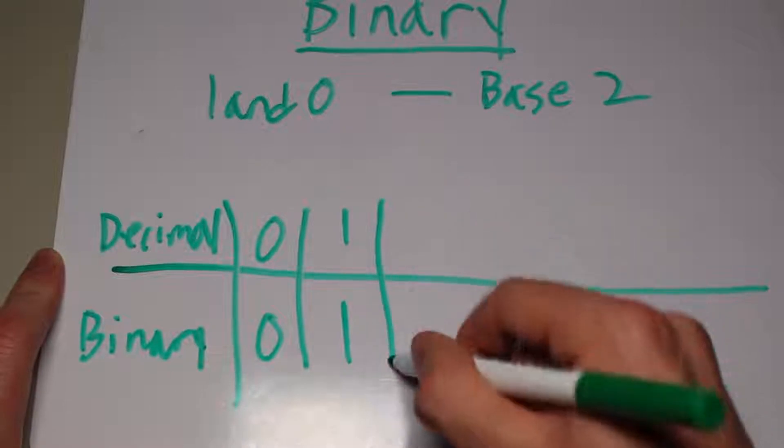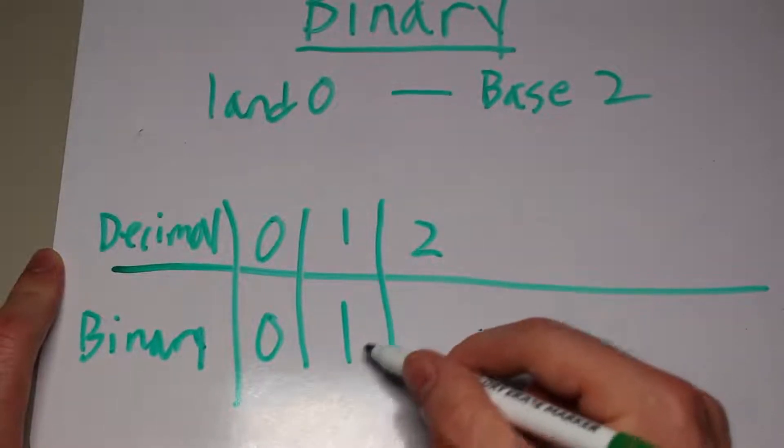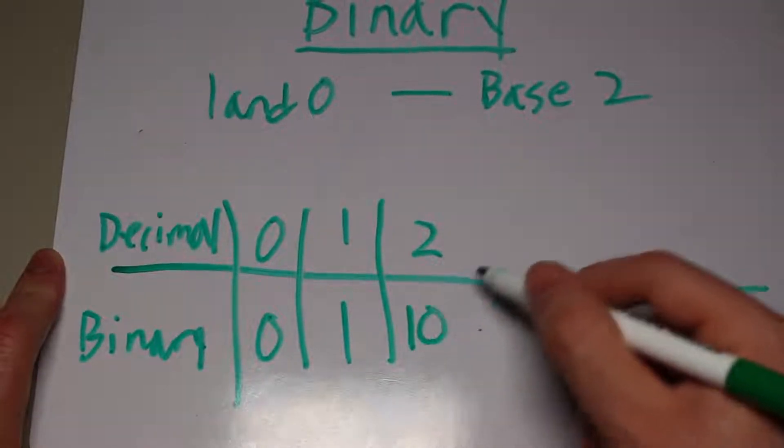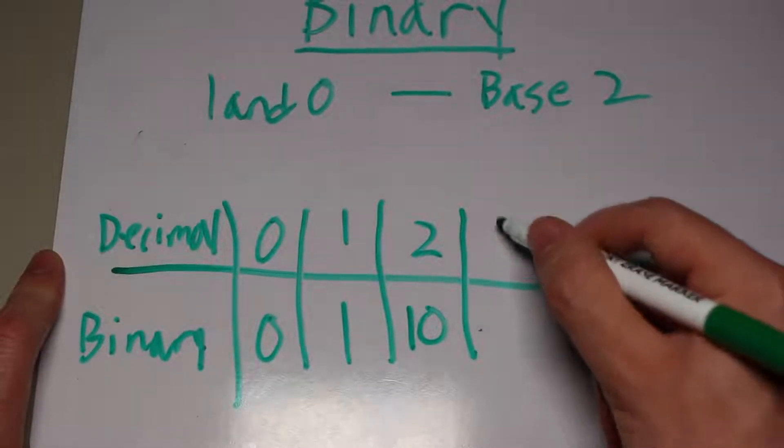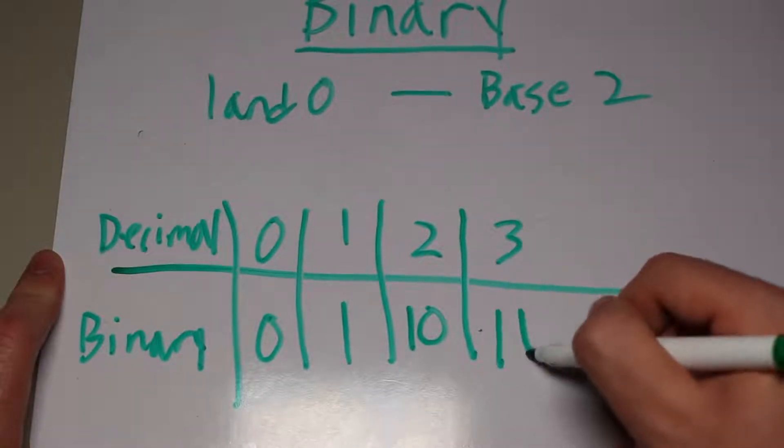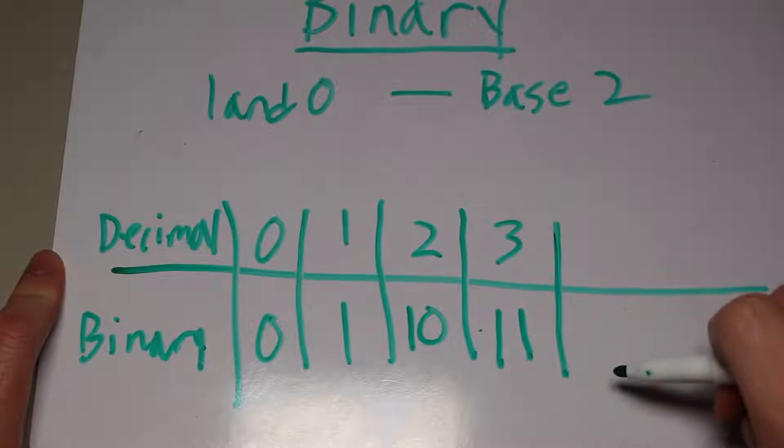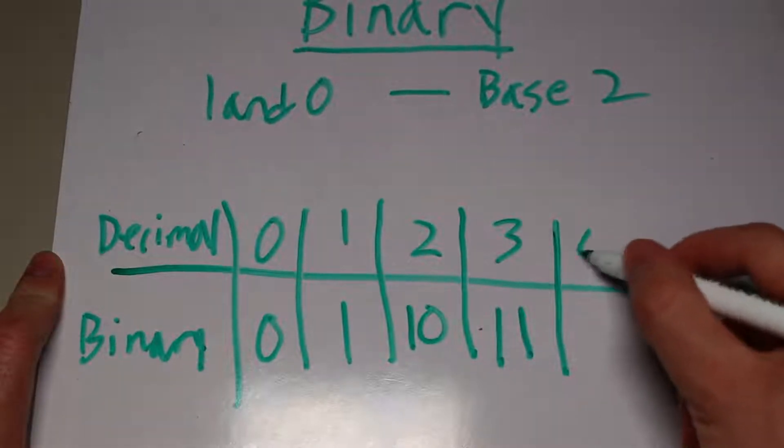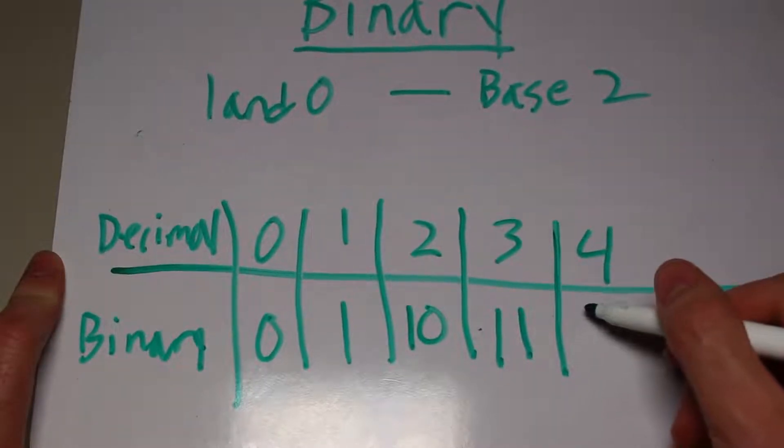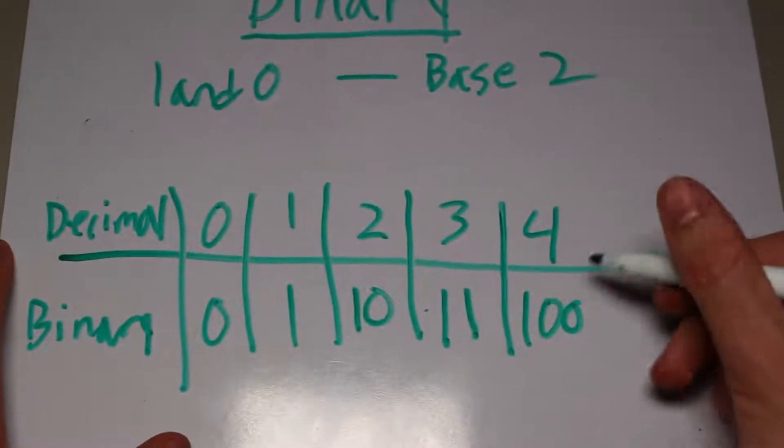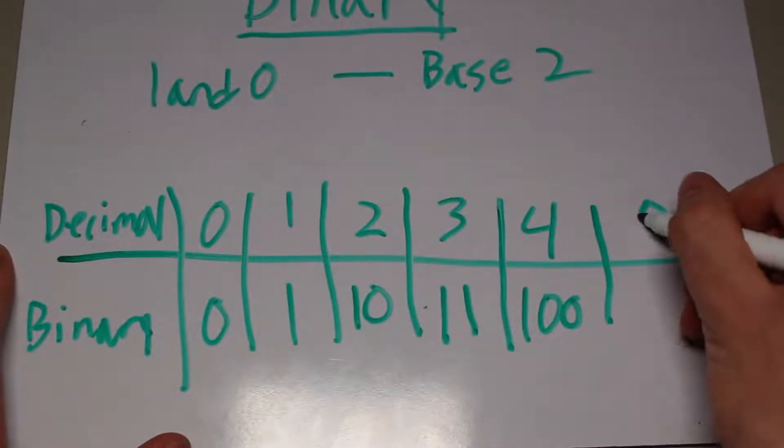But in order to increment the number again, we have to add another digit, because remember there's only a one and a zero. So two would be represented as one zero, and three as one one. And to add another one, we have to add another digit. So it ends up as one zero zero, and finally five is one zero one. I hope you see the pattern. It really is quite simple, but it can be a little confusing if you are new to seeing this.